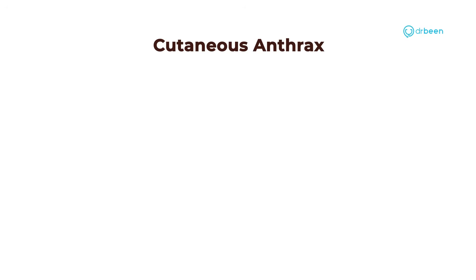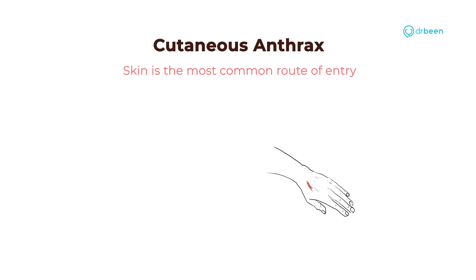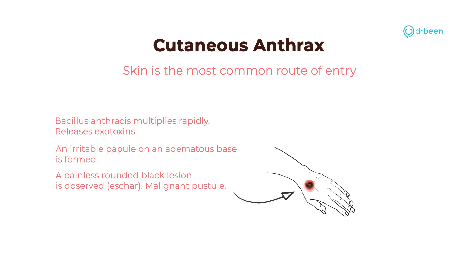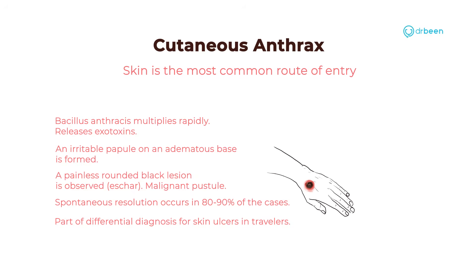Starting with cutaneous anthrax: skin is the most common route of entry and infection for Bacillus anthracis. It multiplies rapidly, releasing potent exotoxins that cause localized tissue necrosis. A single irritable papule on an edematous base is observed first. With further progression, a painless rounded black lesion surrounded by a rim of edema is observed — this is called the malignant pustule. Without treatment with penicillin, the pathogen will continue to infect and grow, leading to death. Spontaneous resolution occurs in 80–90% of cases; in others, severe skin edema, shock, and death will occur. Skin anthrax is part of the differential diagnosis for ulcers in travelers.